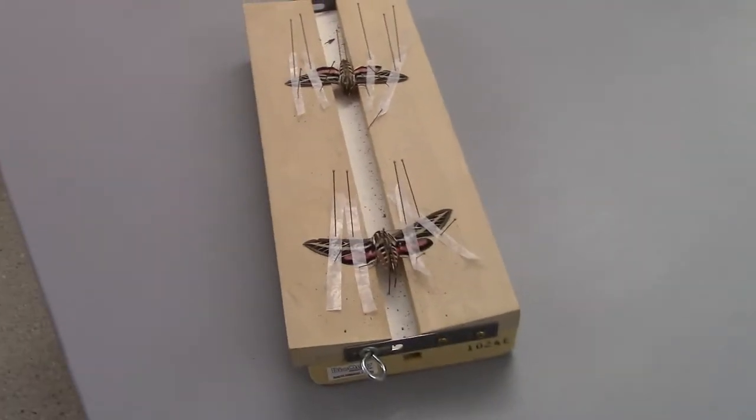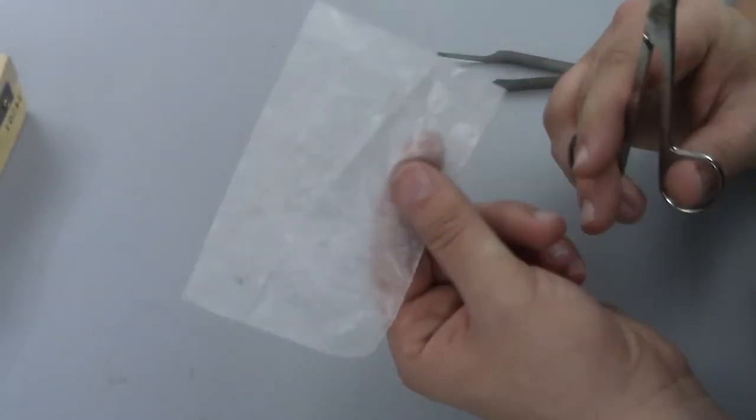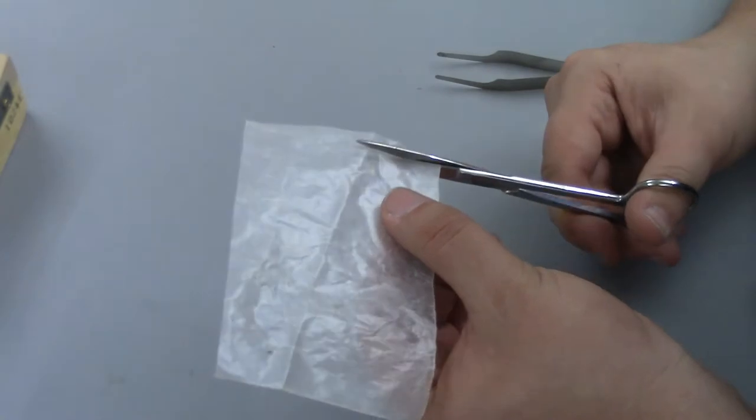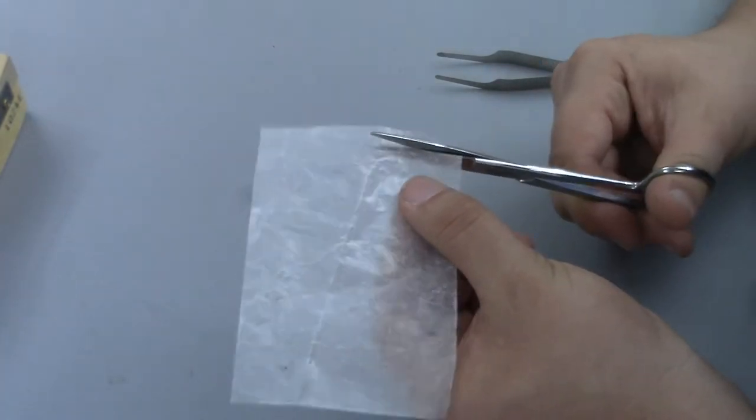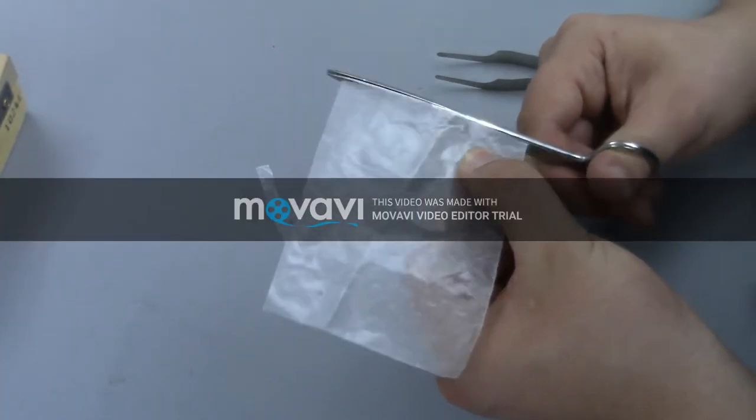First, you're going to need a pinning board. Next, take some wax paper and cut the wax paper into small strips. These strips will be used to hold down the lepidoptera.